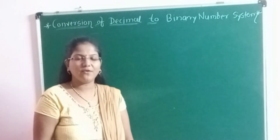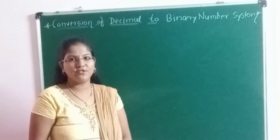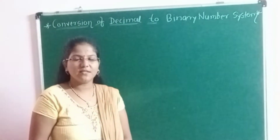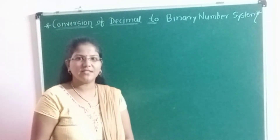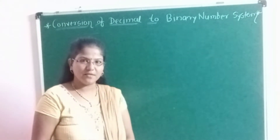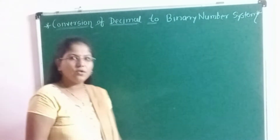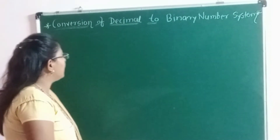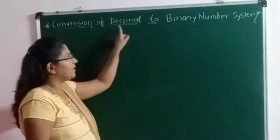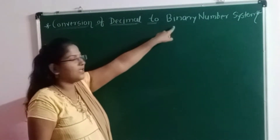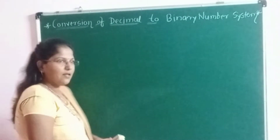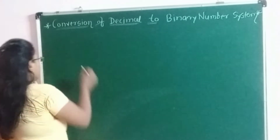Hello everyone, welcome back to my channel S.J.A.P.O.M. Tech. Today's topic is conversion of decimal number to the binary number system. If any decimal number is given, then how to get its equivalent binary number?